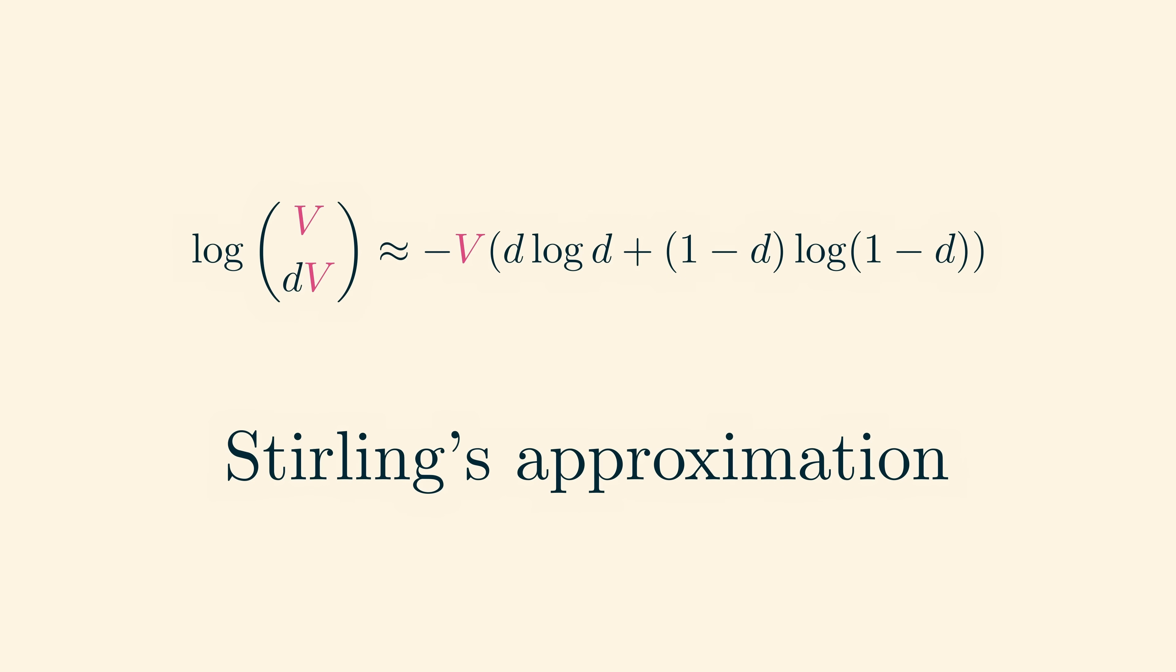The first thing is to rewrite v choose dv as v factorial over dv factorial times the factorial of 1 minus d times v. The logarithm of v choose dv then becomes the log of v factorial minus the log of dv factorial minus the log of 1 minus dv factorial. And now we just need to understand the logarithm of a factorial.